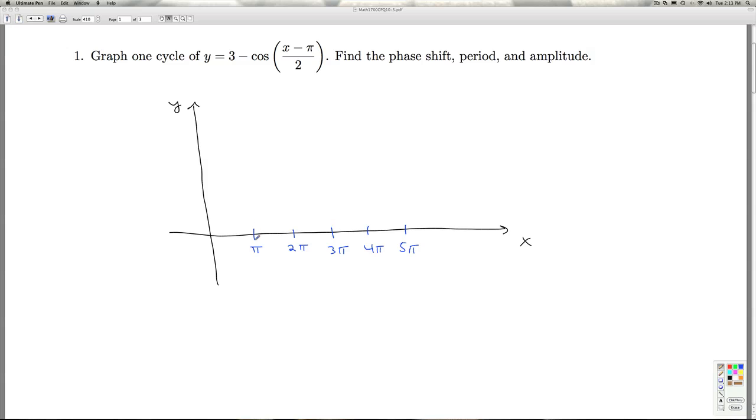And when we plugged π in, we got out 2. We plugged in 2π, we got out 3. We plugged in 3π, we got out 4. And then 4π, we got 3, and then 5π, we got 2.